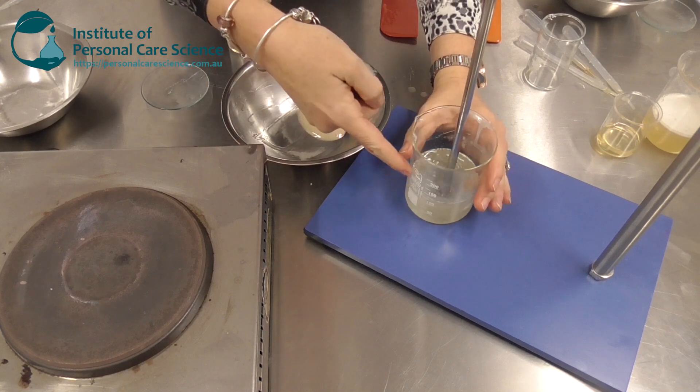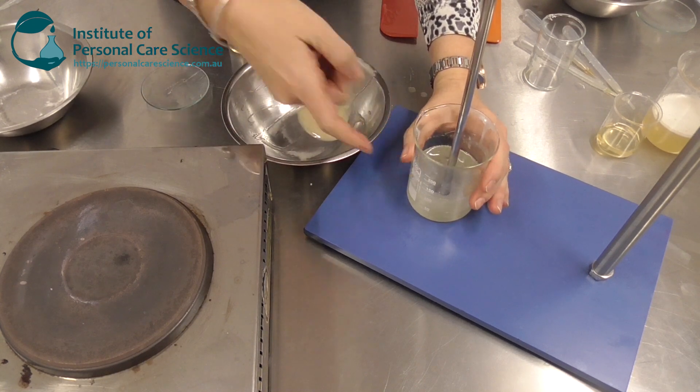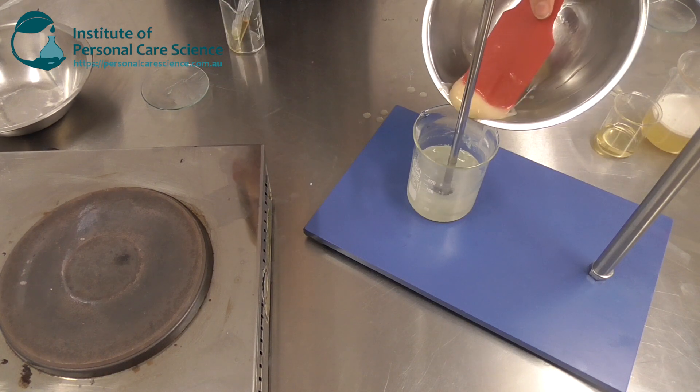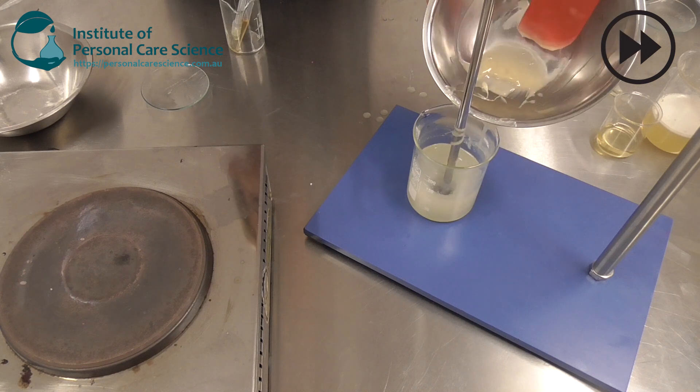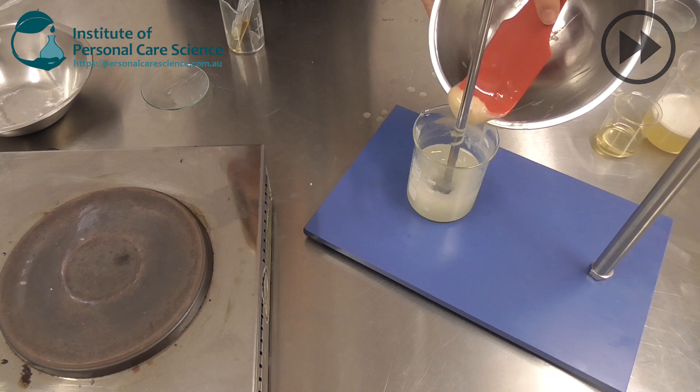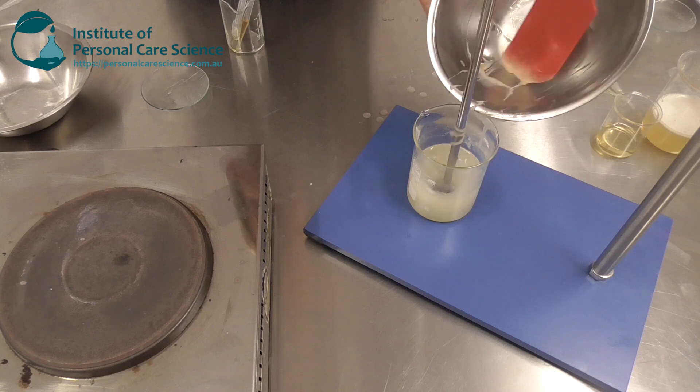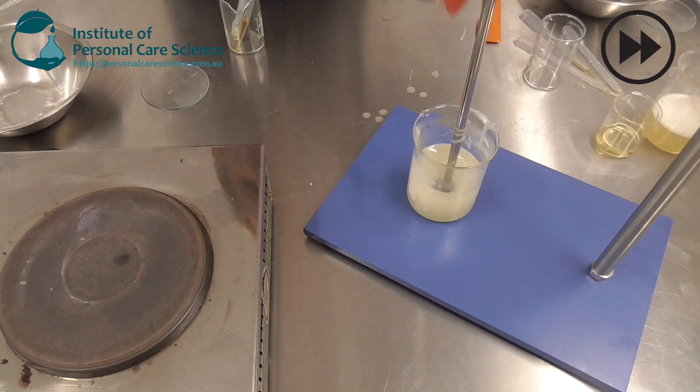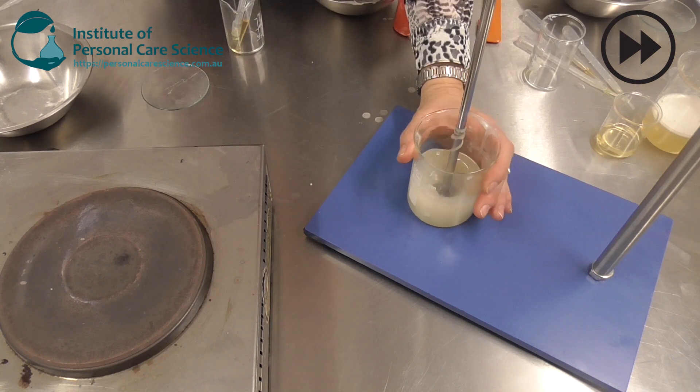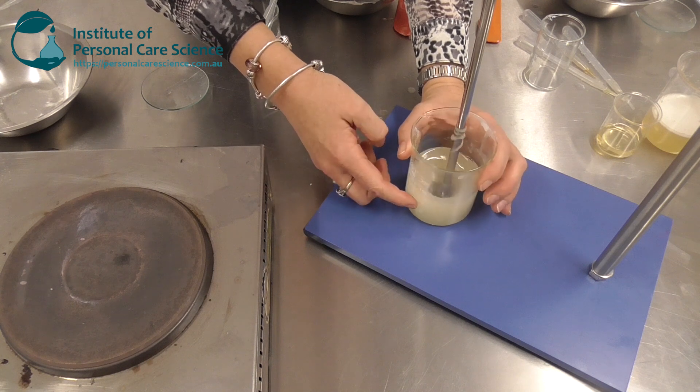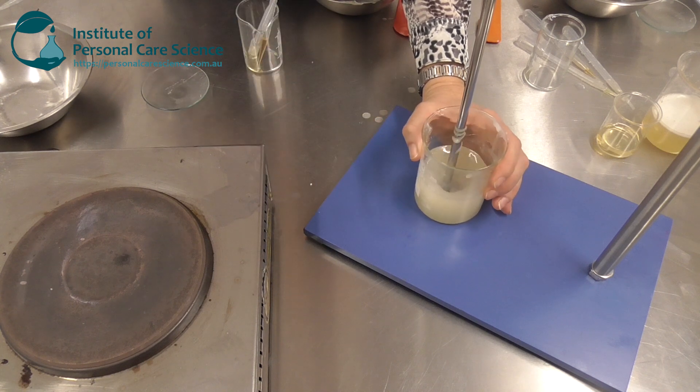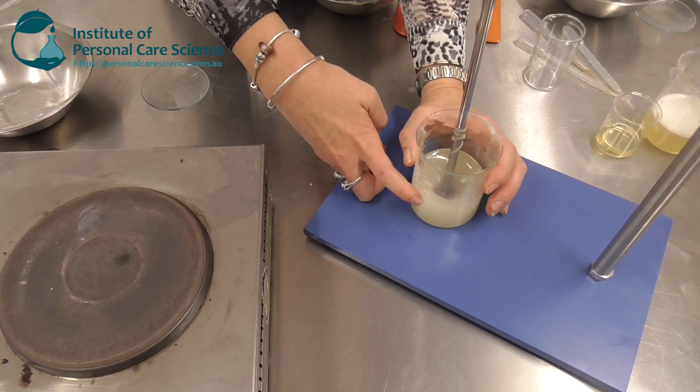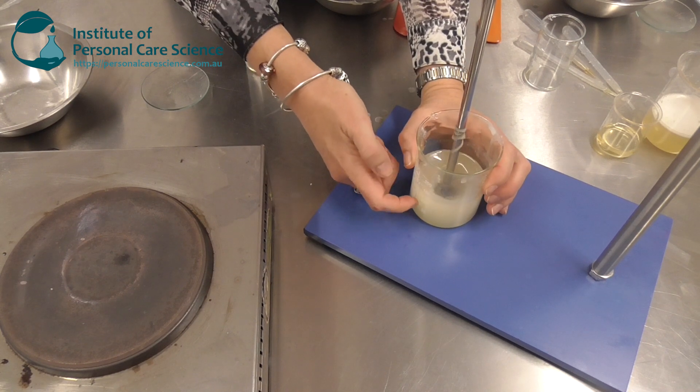Now we need to make sure that the oil phase is thoroughly melted and combined before we start adding our solubilized mixture. Again you could hand stir this, I'm simply showing you in the beaker so that you can see what's happening. It is important that you mix the two phases together well, otherwise you won't end up with a stable end product. So if you have any stability issues long term, it would be because you haven't mixed this part properly.